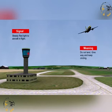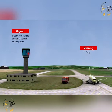A steady red light from air traffic control to an aircraft in flight means that the pilot is not to land the aircraft and must give way and keep circling. A steady red light from air traffic control to an aircraft or vehicle on the ground means that the aircraft or vehicle must stop.